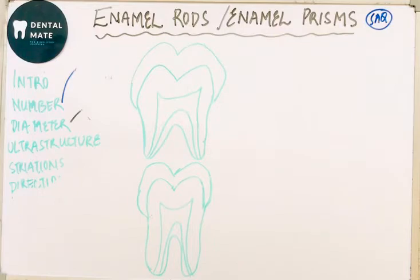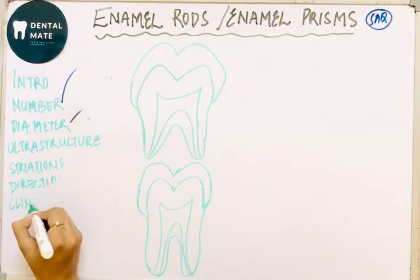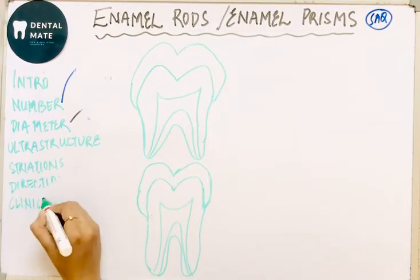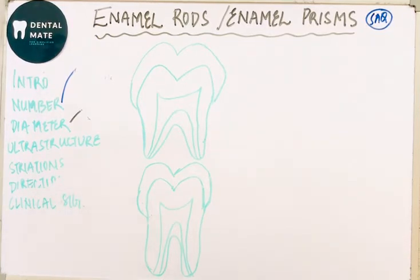This is in continuation with the previous video. In this video, we will be discussing striations, the directions in which the enamel rods are oriented, and the clinical significance of these directions.